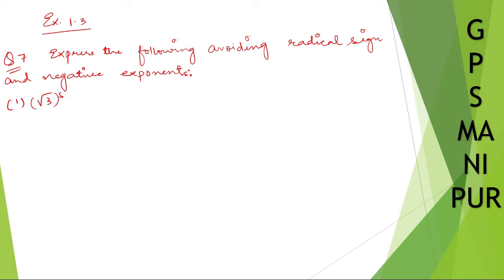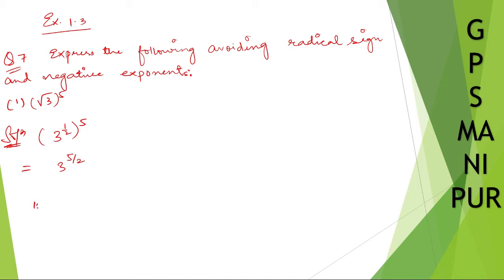Roman number one: root over three to the power five. We are going to avoid the radical sign and negative exponents. We can write the root as a power of one-half, so this becomes three to the power five by two. This is the opposite of the previous question, question number six.